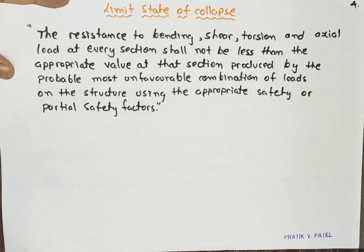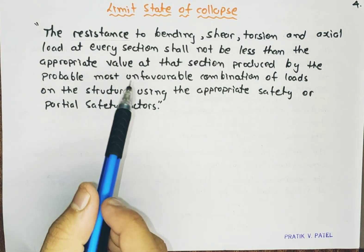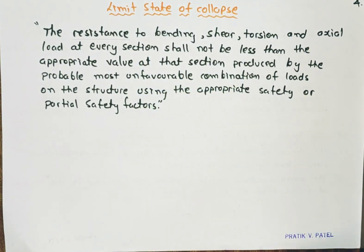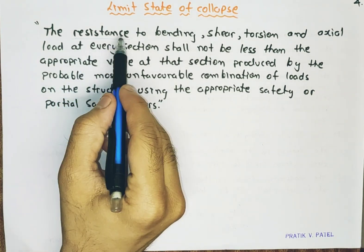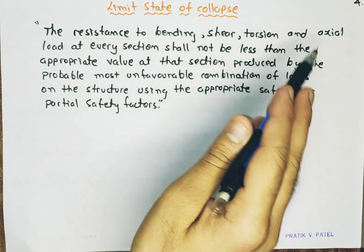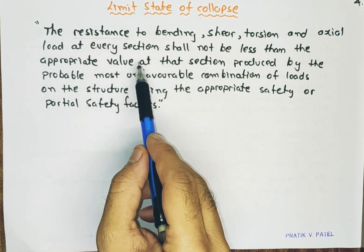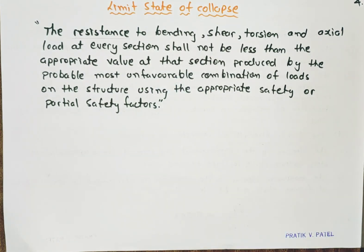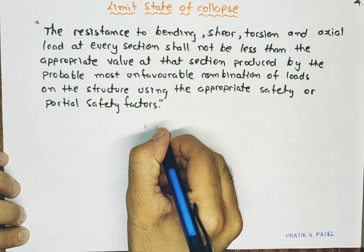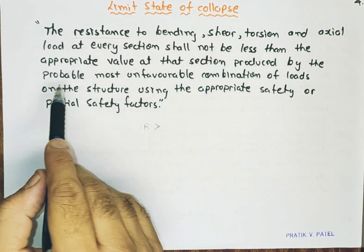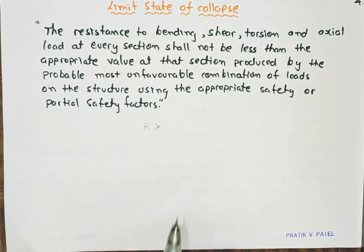First: limit state of collapse. What is the limit state of collapse, and why do we call it that? Up till what limit are we considering the loading conditions? The resistance to bending, shear, torsion, and axial load — these are different kinds of loads and we are talking about resistance towards them. The resistance at every section shall not be less than the appropriate value of resistance.